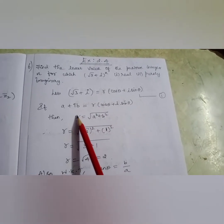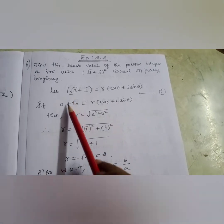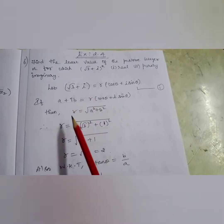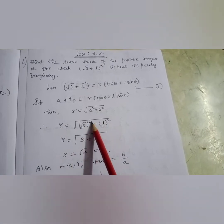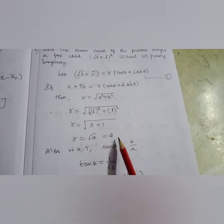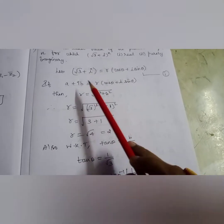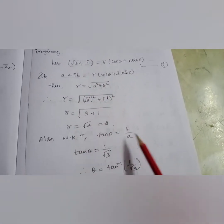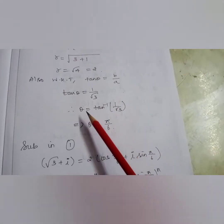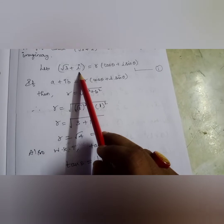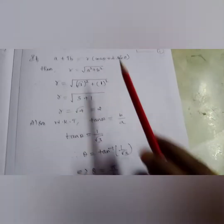There is a condition: if a + ib = r(cos θ + i sin θ), then r = √(a² + b²). Comparing a + ib with √3 + i, we have a = √3 and b = 1. So r = √(3 + 1) = √4 = 2. Also, tan θ = b/a = 1/√3, which gives θ = tan⁻¹(1/√3) = π/6. Substituting: √3 + i = 2(cos(π/6) + i sin(π/6)), and raising to power n: (√3 + i)^n = 2^n (cos(π/6) + i sin(π/6))^n.